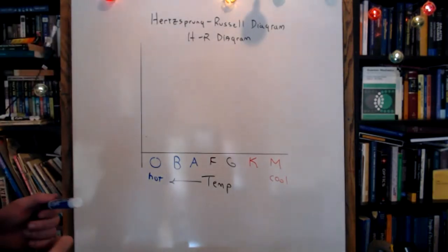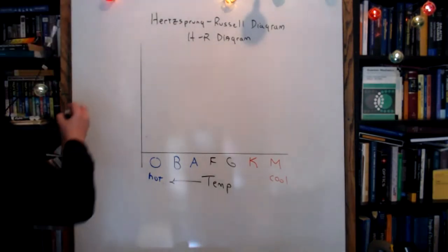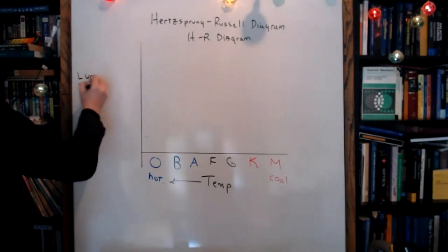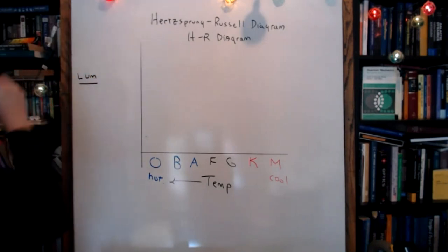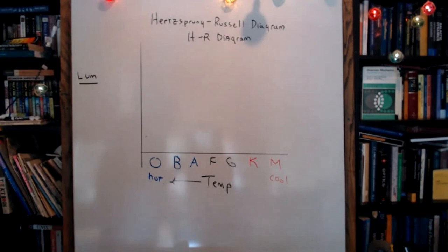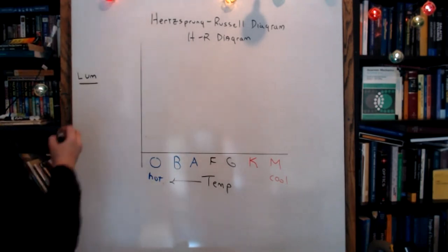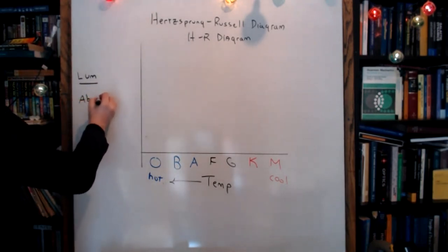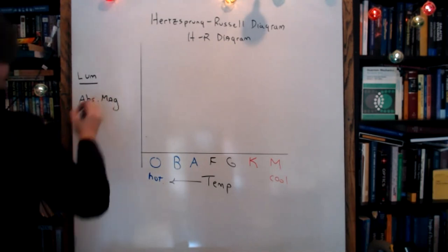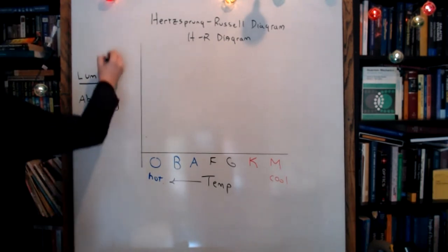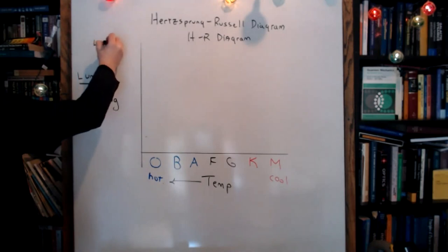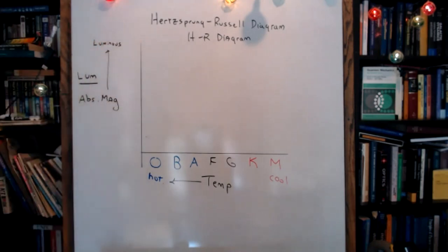On the y-axis we plot either the luminosity, but what professional astronomers usually plot is absolute magnitude, in such a way that the more luminous stars are up at the top.